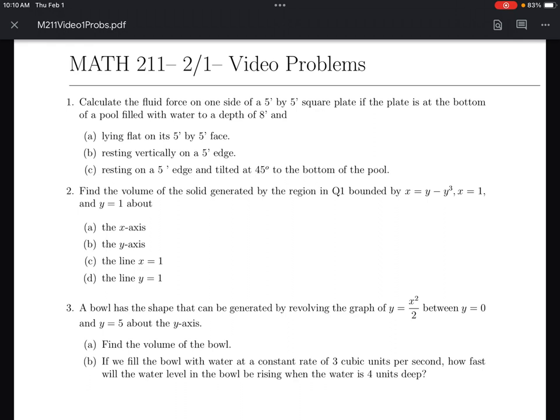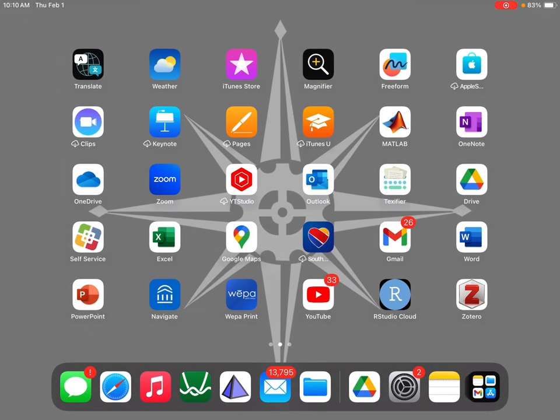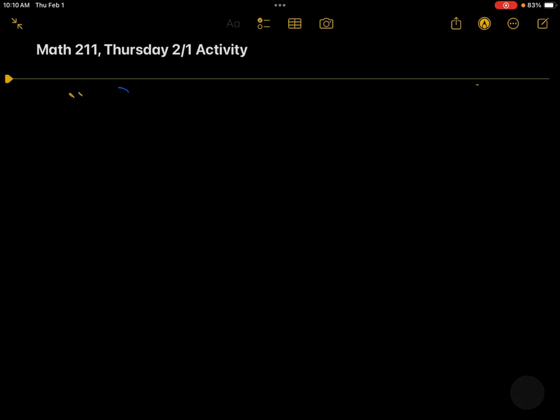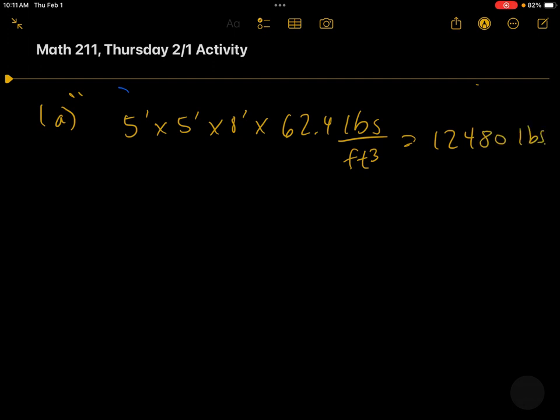And then the idea behind this is we'll do problem one, I'll present it, and then you should turn your video off, have a go, and then come back on and watch me solve it and do that for all three problems. Okay, so let's jump into this. We're calculating the fluid force on one side of a 5x5 square plate at the bottom of the pool with a depth of 8 feet. And for part A, it's just lying flat on its 5x5 face. So this is constant depth. This is 5 feet. So you just take the area of the plate, then you multiply it by the depth, and then you multiply that by 62.4 pounds per cubic foot. And plug that into whatever, 24,480 pounds. So too easy.